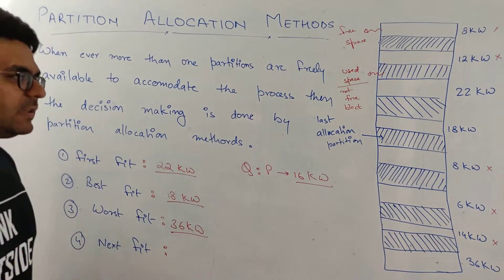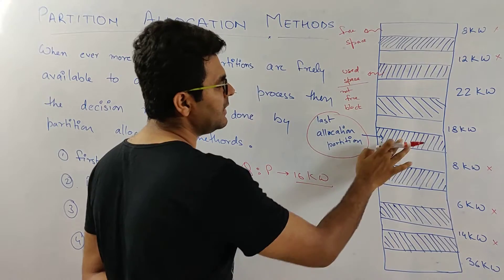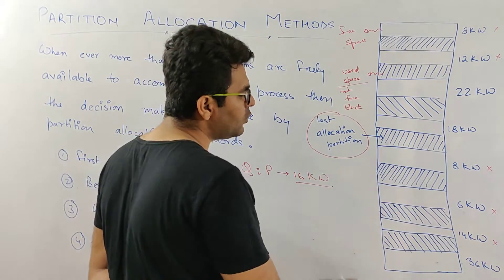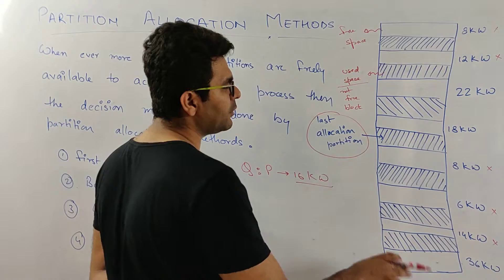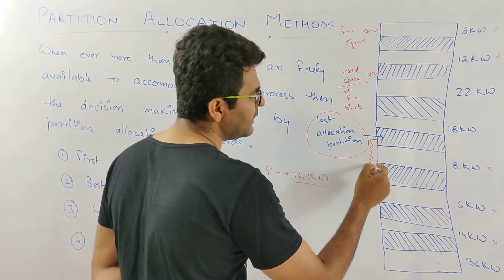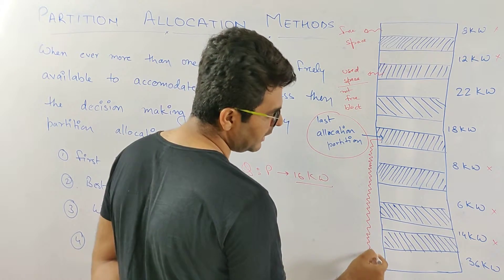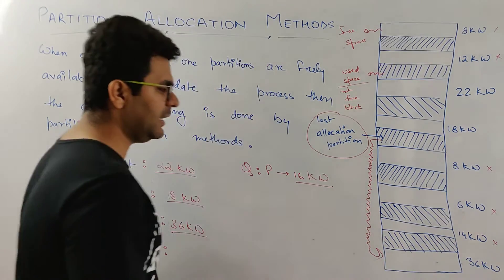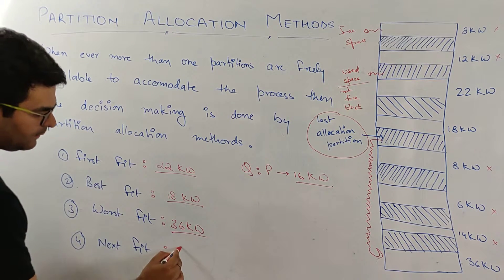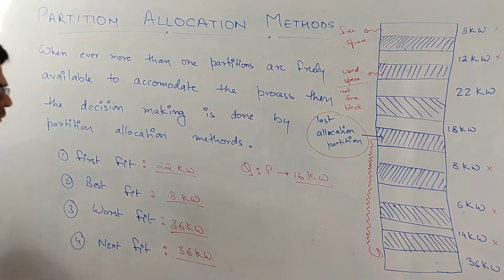The last technique is next fit. Next fit asks: what is the last allocation partition? Starting from the last allocated partition, we scan forward. We check 8k words — too small — 6k words — too small — 14k words — not allowed. The process can only be kept inside the 36k word block, so we place the process there.